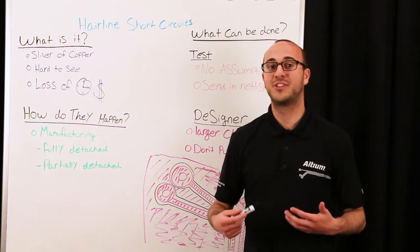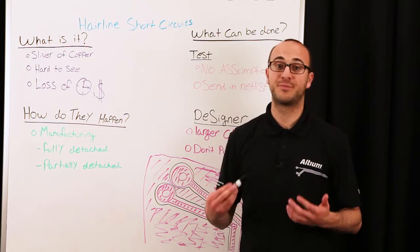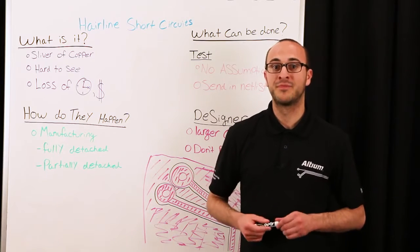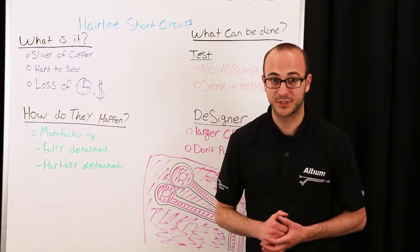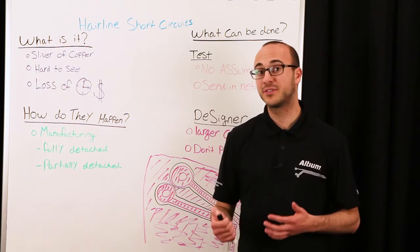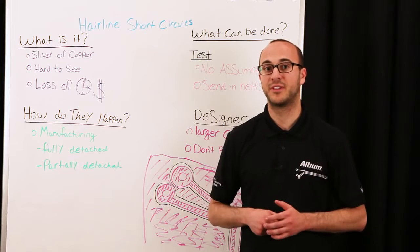To understand how these short circuits happen, you need to understand the general process of PCB manufacturing. PCBs are typically made of copper laminated on a non-conductive substrate. A common method to transfer the circuitry onto the PCB is through photo engraving,